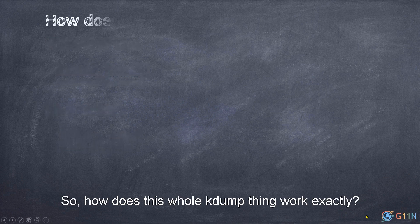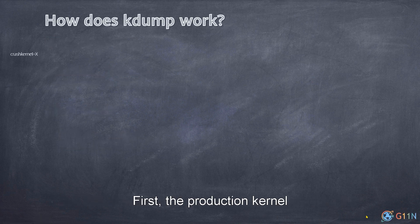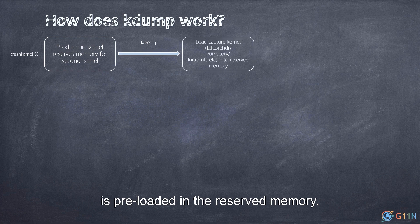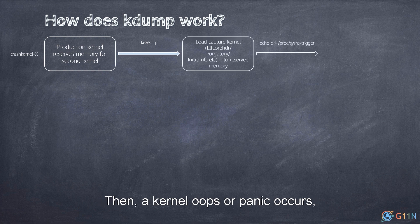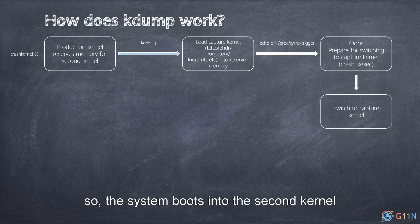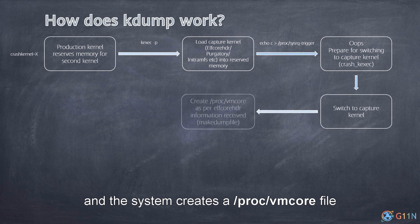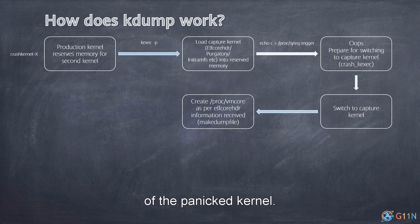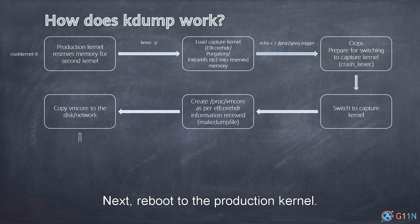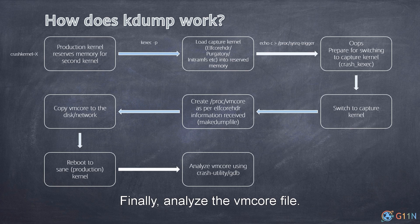So how does the whole KDump thing work exactly? First, the production kernel reserves a chunk of memory. Second, the capture kernel is preloaded in the reserved memory. Then a kernel oops or panic occurs, and the system boots into the second kernel. The system creates a vmcore file, which is the memory image of the panicked kernel. Then, vmcore is copied for future analysis. Next, the system reboots to the production kernel. Finally, we analyze the vmcore file.